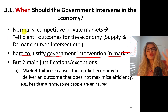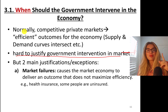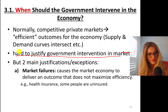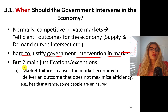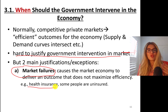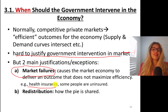But there are two main justifications or exceptions. Number one is market failures — this causes the market economy to deliver an outcome that does not maximize efficiency. Whenever you have market failures, there's a justification for government intervention, such as in the case of health insurance, requiring people to have health insurance and giving them access to affordable coverage.